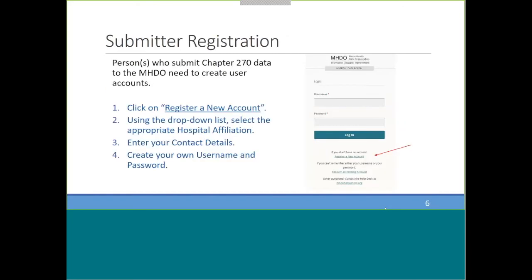The first step is creating user accounts for the portal — and I know many of you have been through this, as we've seen a lot of good activity over the last week. To register a new account, go to the link shown on the previous screen. There's a link at the bottom of the page that says 'register a new account.' Once you click on that, you'll be brought through a series of questions. The first is a drop-down list where you'll select the appropriate hospital you're affiliated with, then enter contact details and choose a username and password for your account.